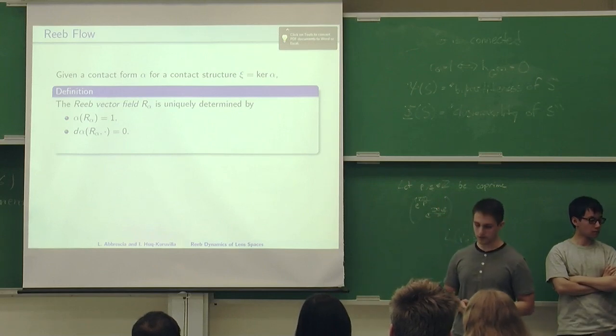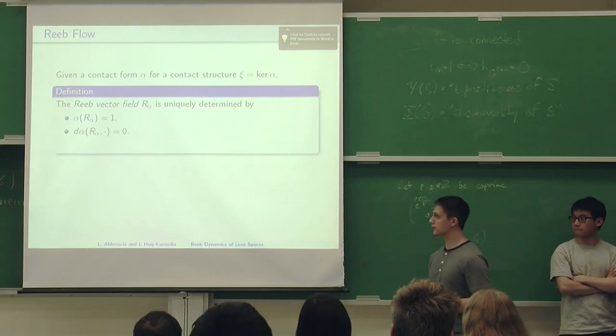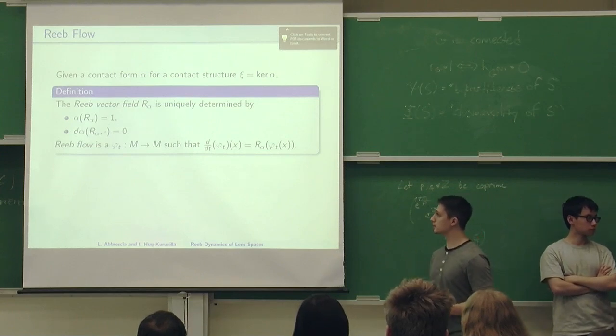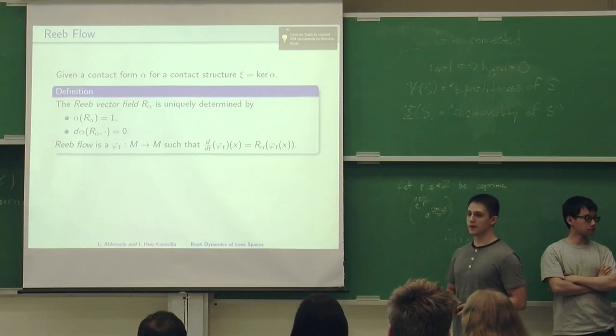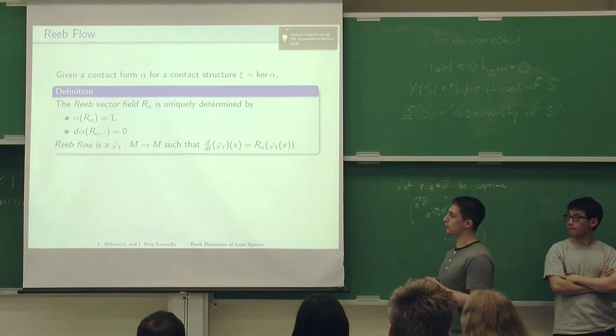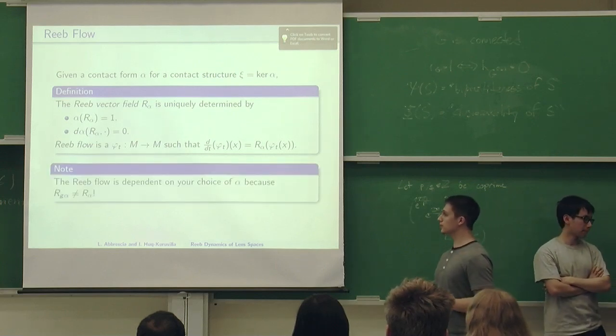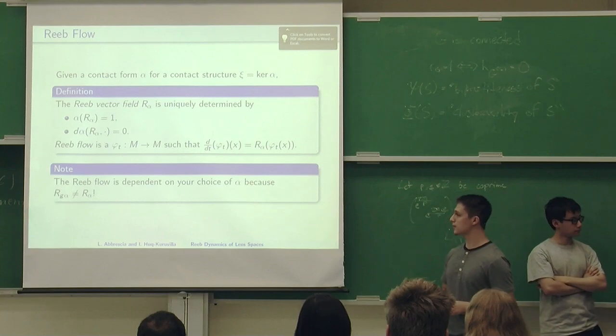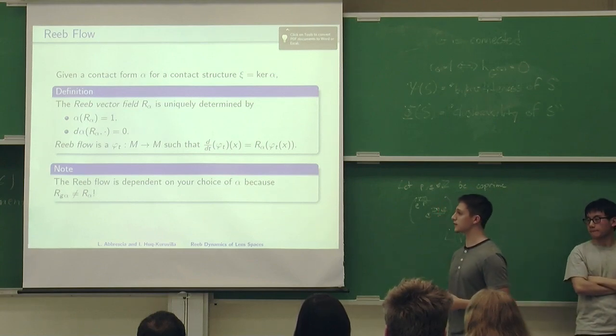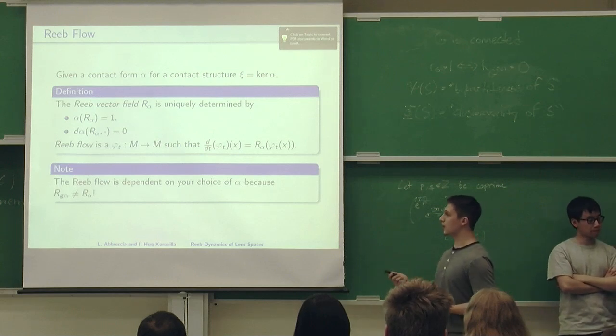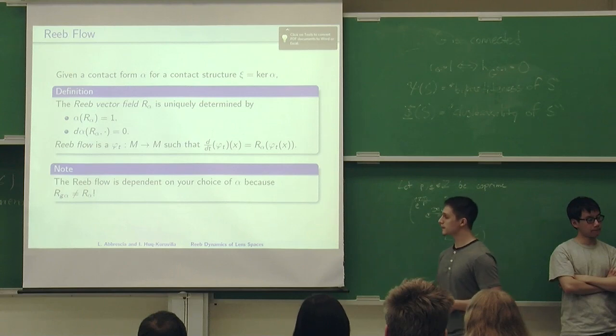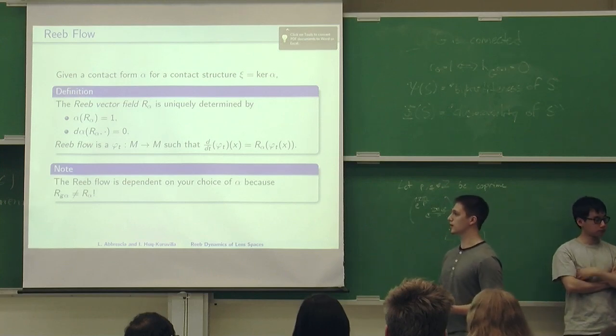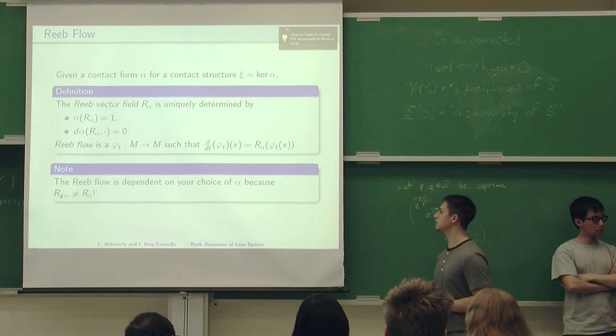When we have vector fields, the natural thing to do is flow along these vector fields. We call the Reeb flow the usual integral along the vector field. Now you might have realized that it's very important which form we have. What I mean is the Reeb flow of some form alpha is not the same as the Reeb flow of G alpha. Even though G alpha and alpha have the same contact structure, if alpha of R equals 1, G alpha of R is not going to equal 1. We can have two contact manifolds which have the same contact structure but wildly different Reeb dynamics because Reeb flow is dependent on our choice of alpha.